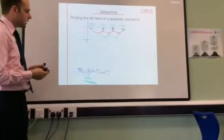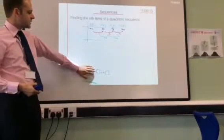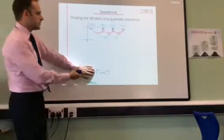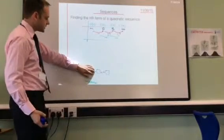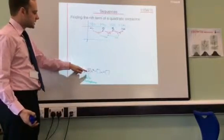Now this is the tricky bit. I know that if I can get rid of this, then this is just a linear sequence, and I can do those. So I need somehow to get rid of 2n squared.